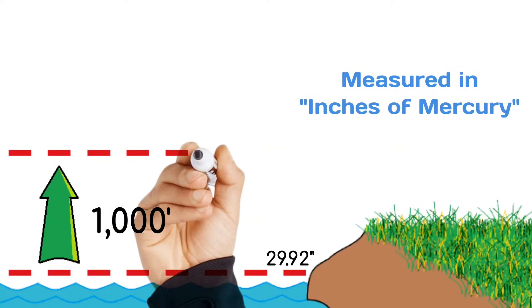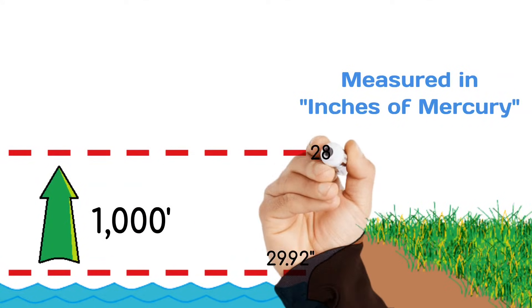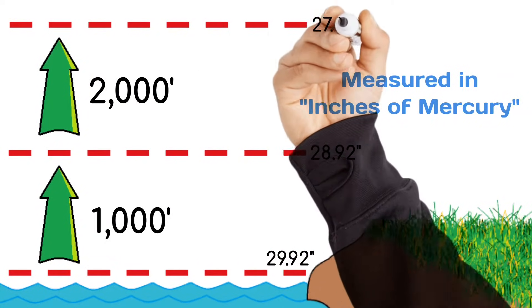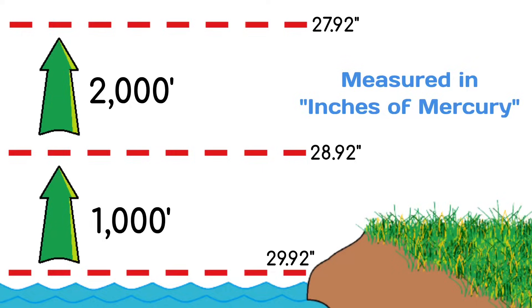Then, every thousand feet above sea level, the pressure reduces by one inch of mercury. In the next lesson, we're going to go into a lot more detail about this and how the altimeter works. So if you haven't already subscribed, please consider doing so.